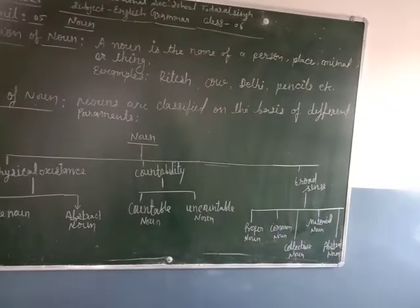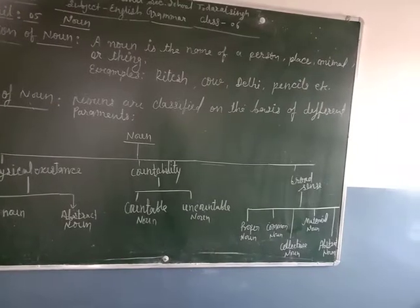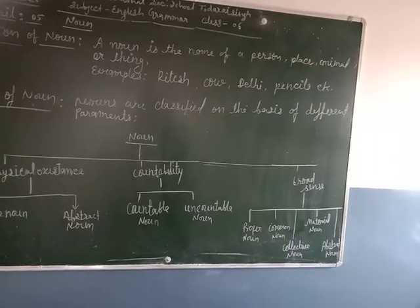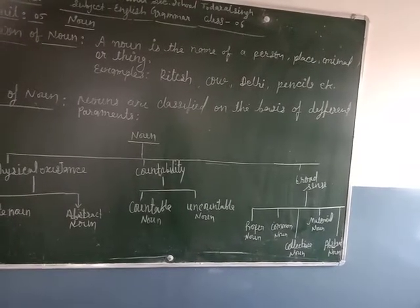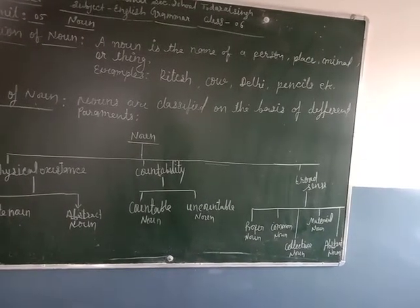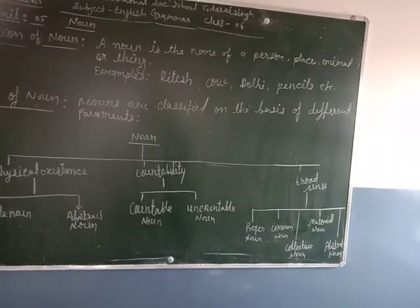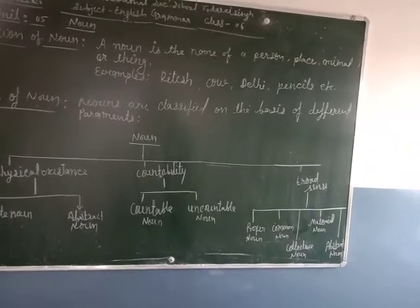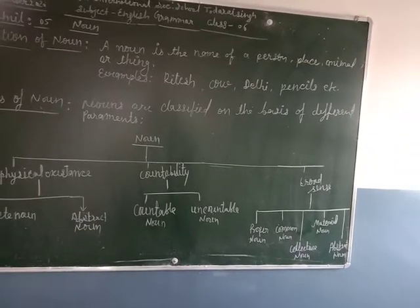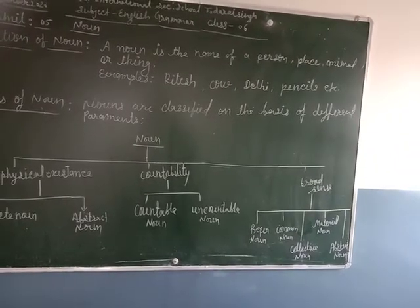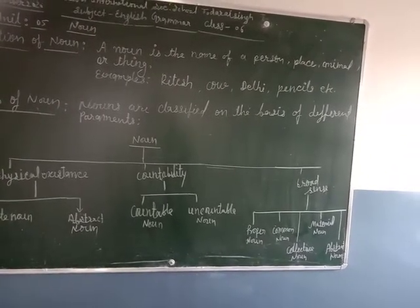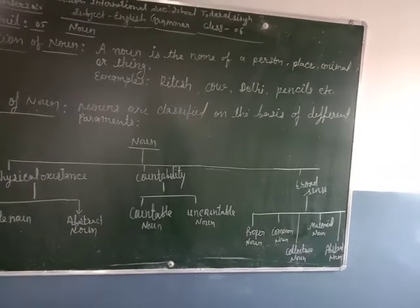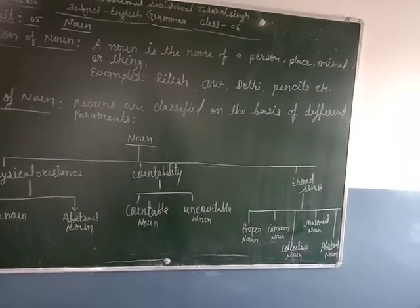Uncountable nouns cannot be counted. For example: milk, gold, honesty, fear, power, etc.